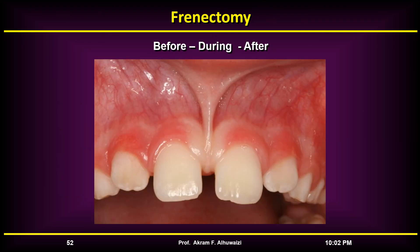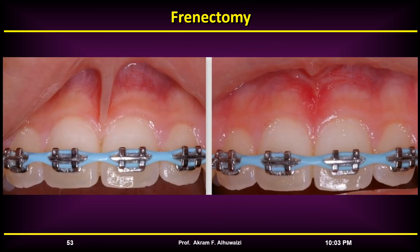If the frenum is thought to be a contributory factor, frenectomy should be considered. Options differ as to whether this should be done before treatment, during space closure, or after completion. Generally, surgical removal of the maxillary labial frenum should be delayed until after orthodontic treatment, unless the tissue prevents space closure or is painful and traumatic. Removal after treatment may help change hyperplastic tissue to normal gingival form and enhance post-treatment stability.